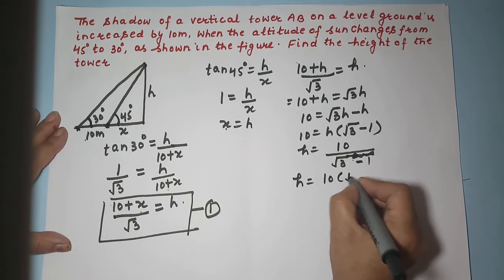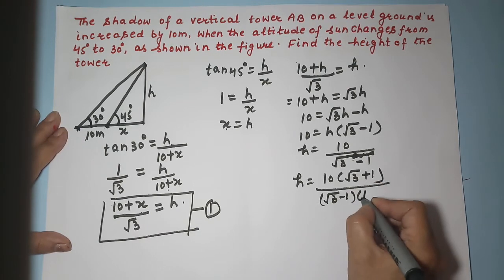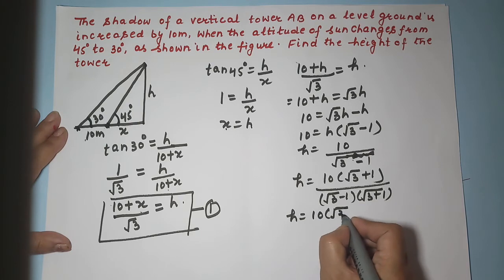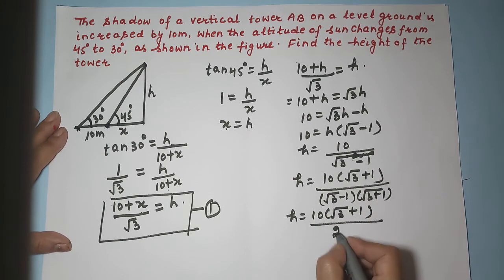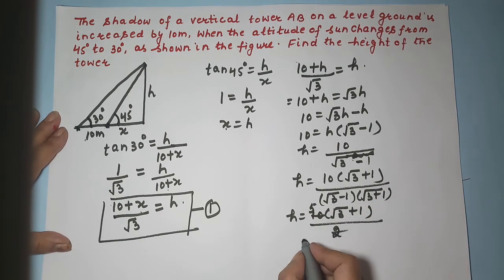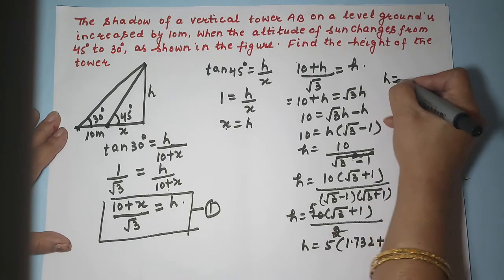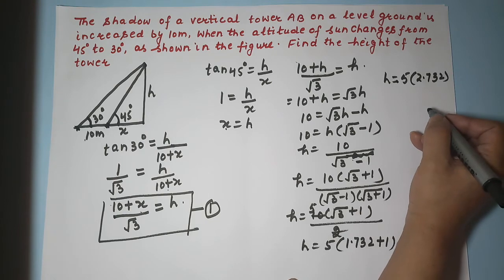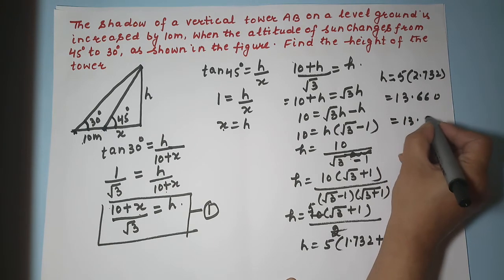Rationalizing by multiplying numerator and denominator by (root 3 plus 1): H equals 10 times (root 3 plus 1) divided by (root 3 minus 1)(root 3 plus 1), which is 10(root 3 plus 1) upon 3 minus 1, giving 10(root 3 plus 1) upon 2, which simplifies to 5(root 3 plus 1). Substituting root 3 as 1.732 plus 1 gives 5 times 2.732, which equals 13.66, approximately 13.7 meters.